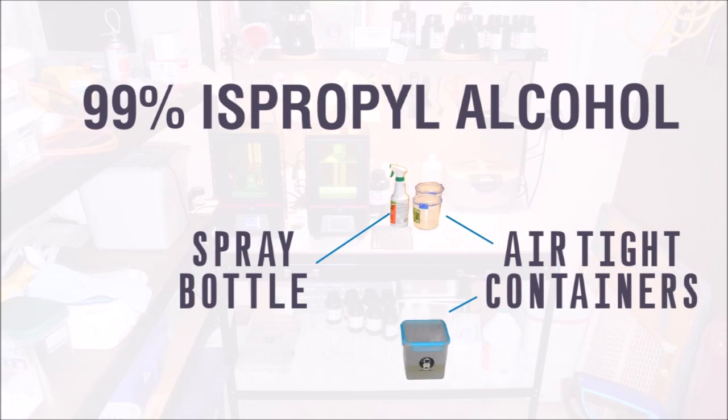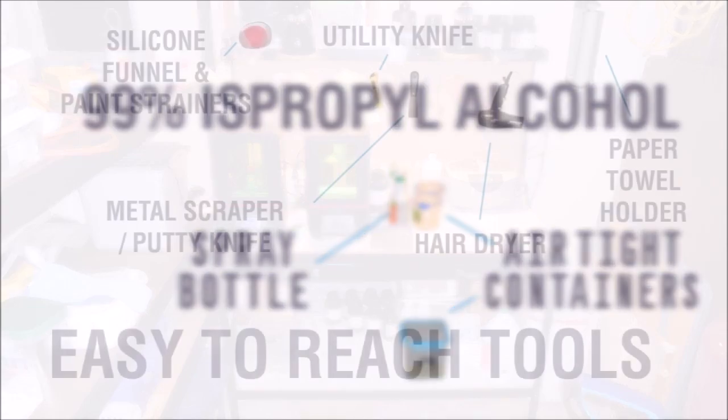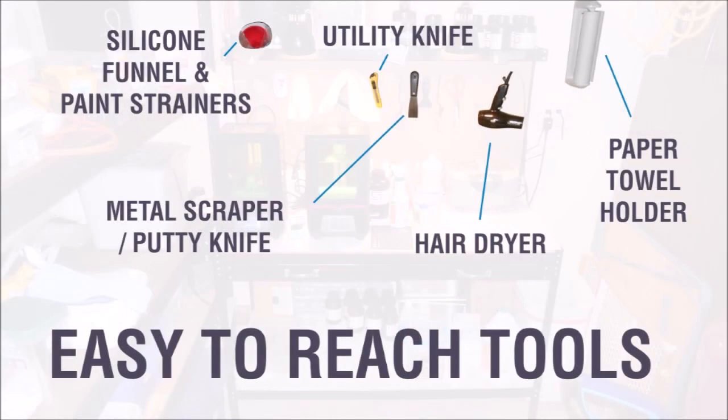I also keep a spare spray bottle filled with IPA handy as well. Remember the pegboard backboard? That comes in very handy when resin printing, because inevitably, when cleaning parts, you're going to find yourself with only one hand available to grab whatever you need next. Having your tools at the ready like shown here is really helpful.